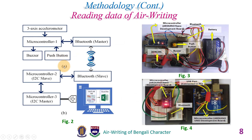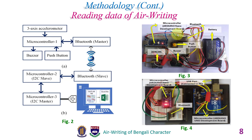This is the block diagram of the air writing data acquisition circuitry. The circuit has two parts: one is the data acquisition and transmitter circuit, and the other is the receiver circuit. These are pictures of the implemented data acquisition system. The user puts this device on their hand; when they write a character in the air, the device transmits the data via Bluetooth to the receiver circuit, which is connected to the computer.